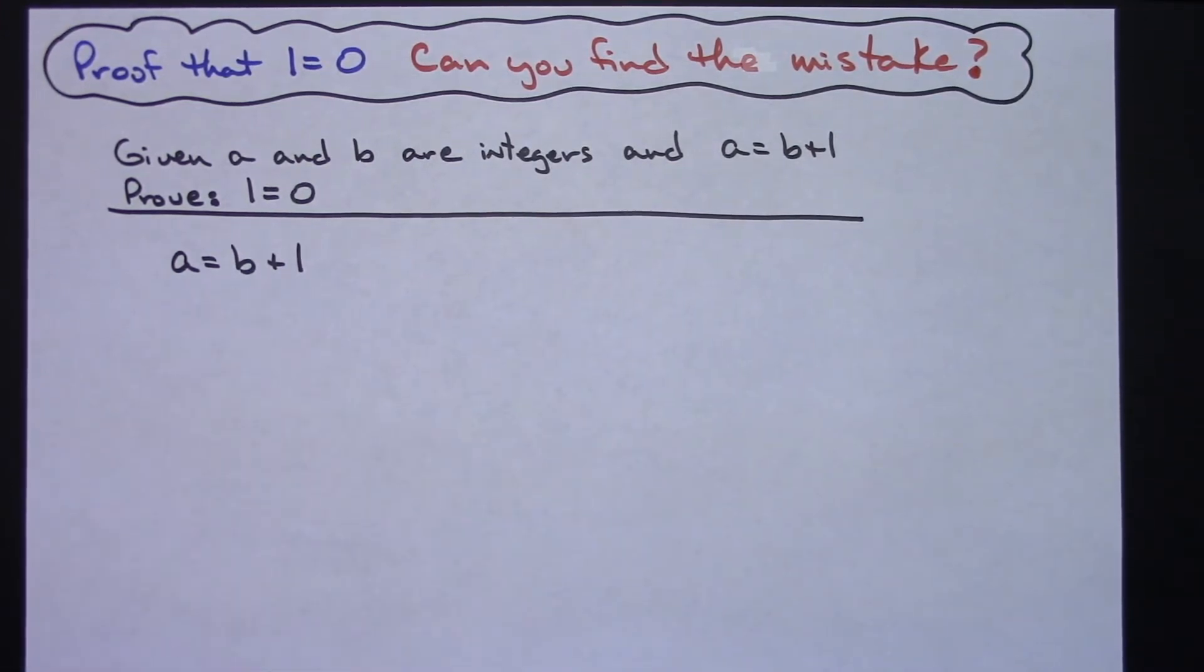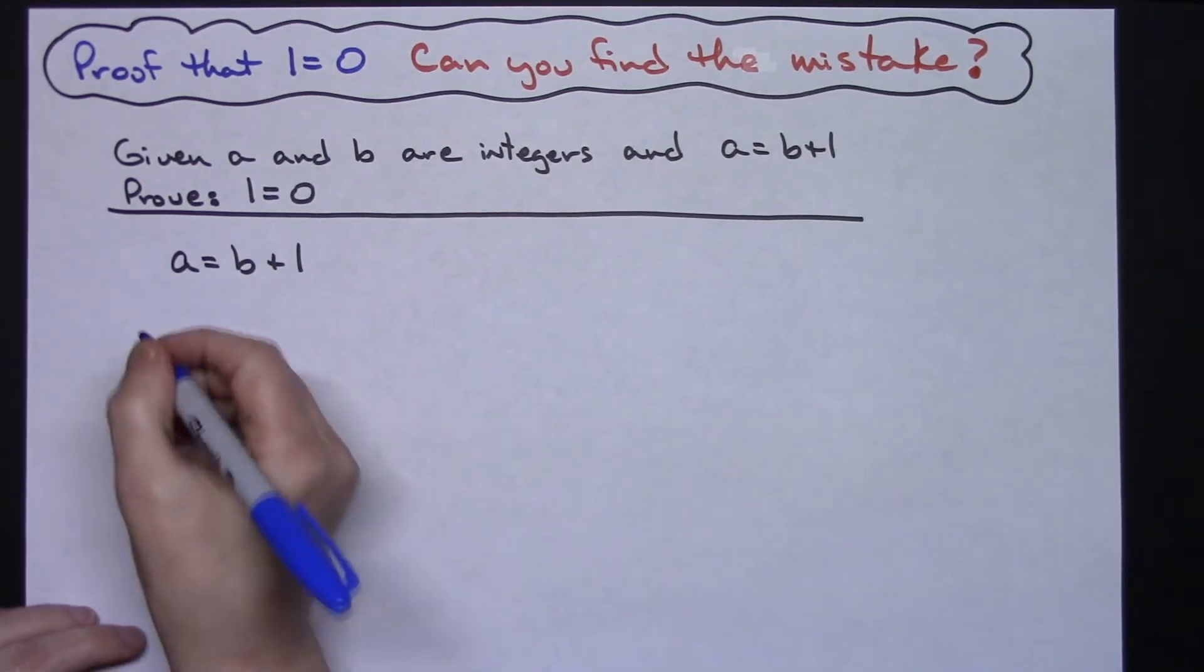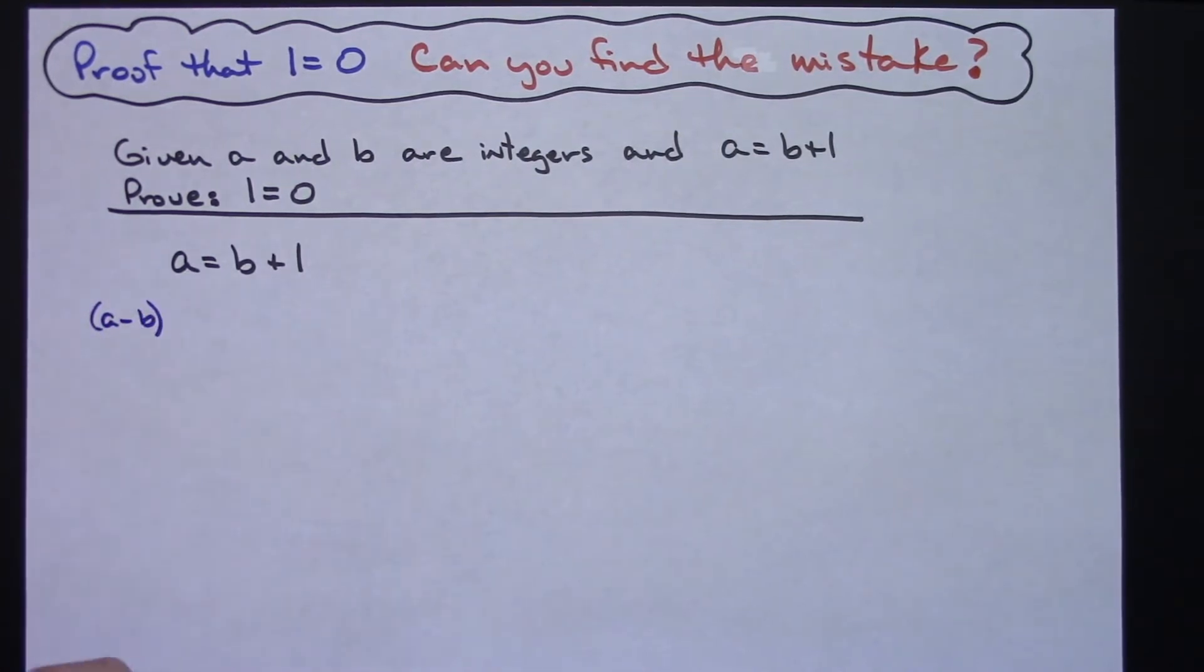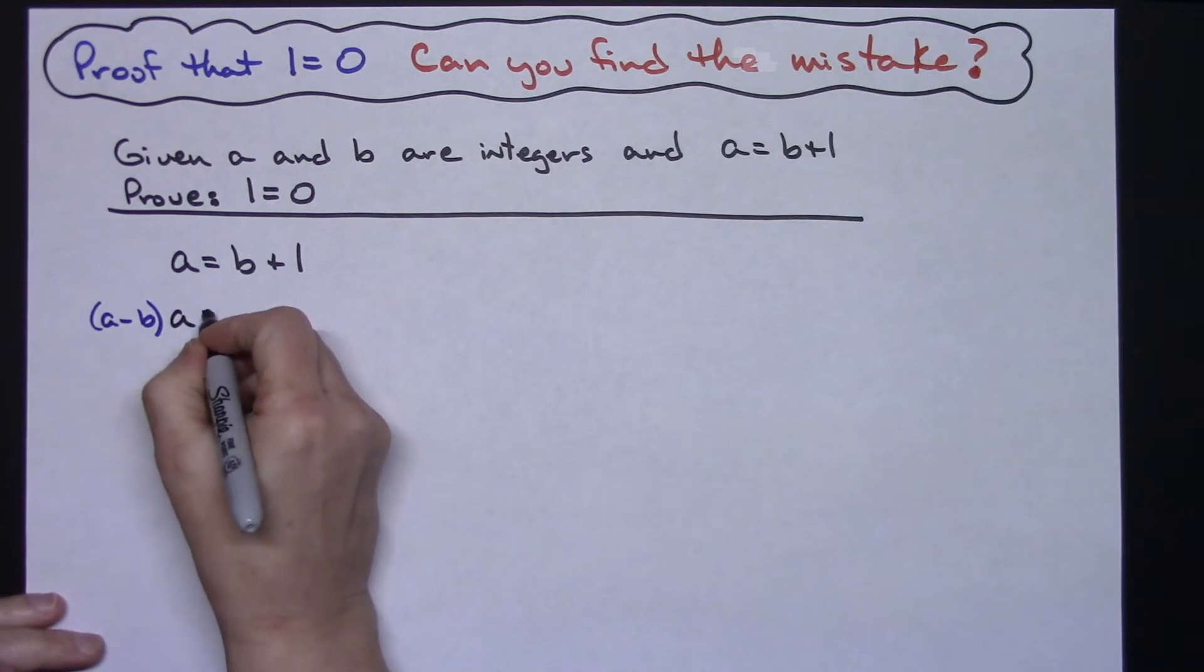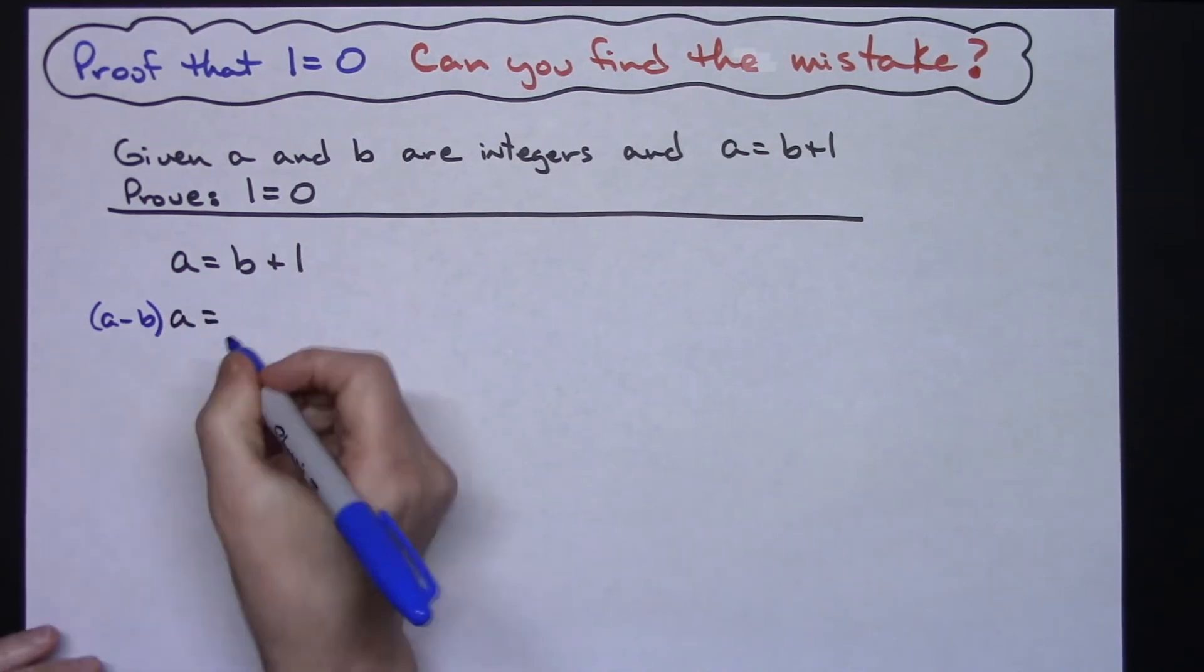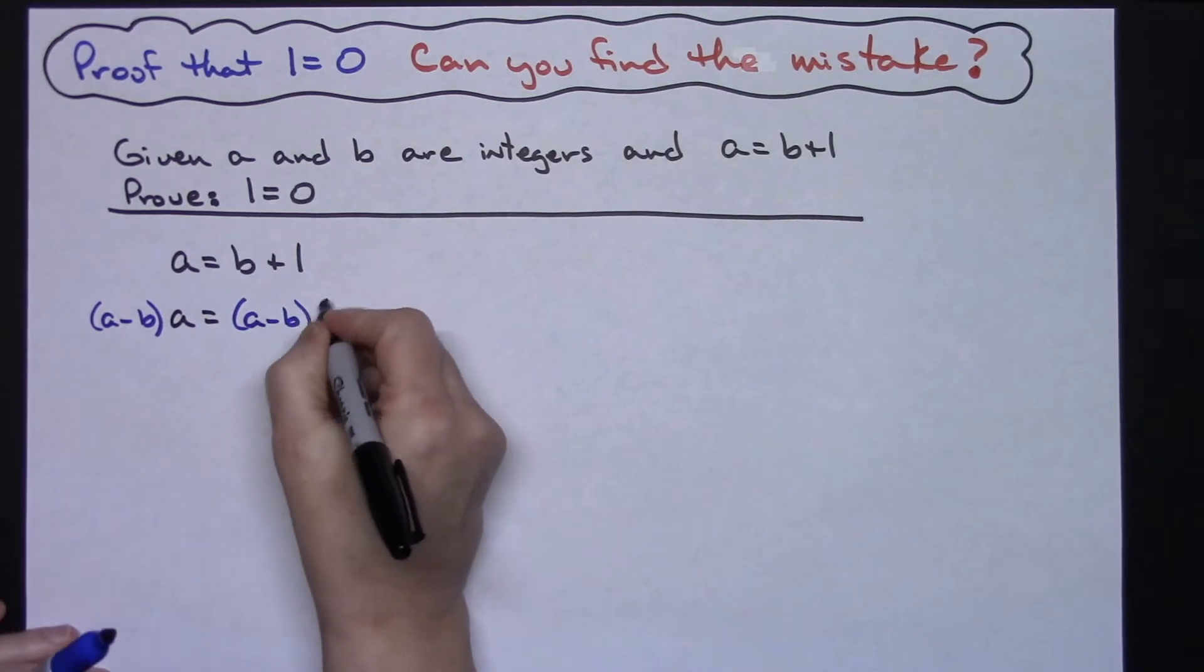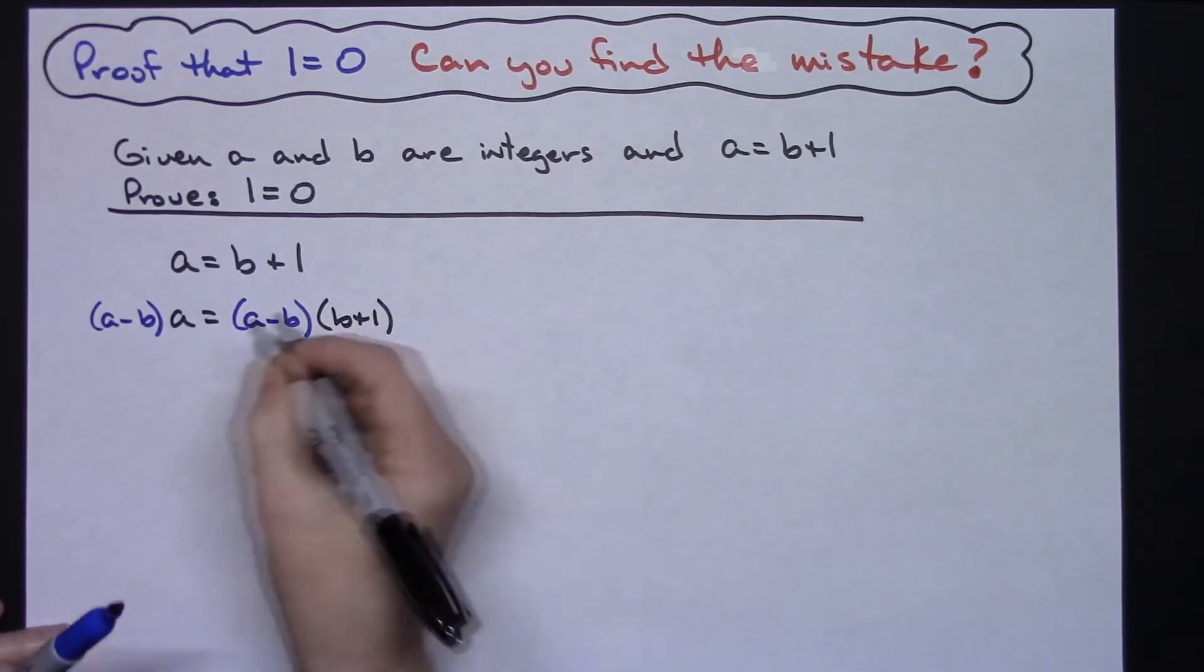Now I'm going to choose to multiply both sides of the equation by a minus b. As long as I multiply both sides of the equation by the same number then that's a legal algebra move, so I'm going to multiply by a minus b on the left hand side and then also multiply by a minus b on the right hand side. That keeps my equation balanced.